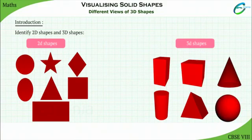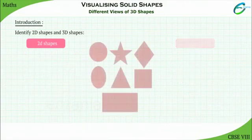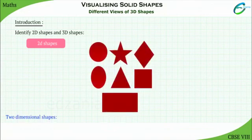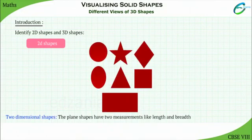2D shapes are plane figures spread over in a single plane and occupy only area. The plane shapes have two measurements like length and breadth. They are called 2D shapes.